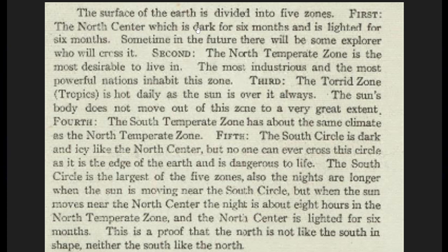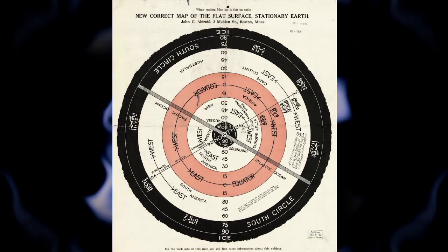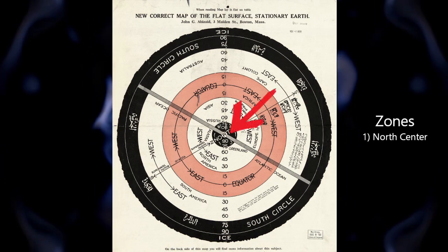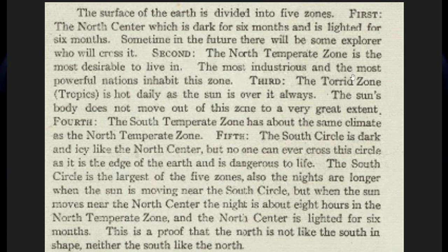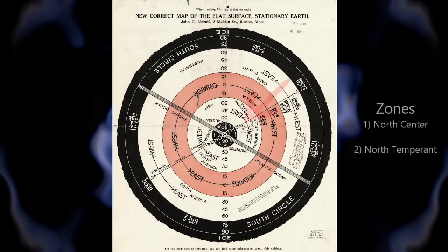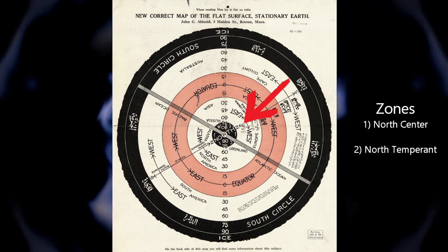The first zone is the north center, which is dark for six months and lighted for six months, and he says someday an explorer will cross it. The second zone, the north temperate zone, is the most desirable to live in. As you see on the map, that black circle in the middle is your north center, and the white ring right around it — basically the northern hemisphere — is the most industrious and most powerful nations.